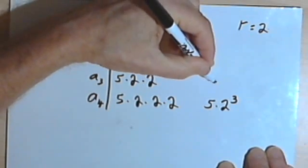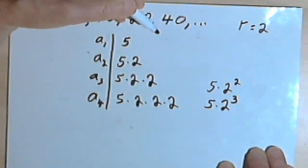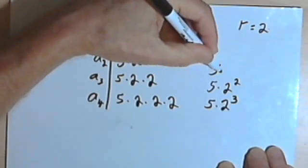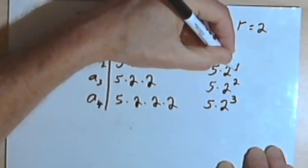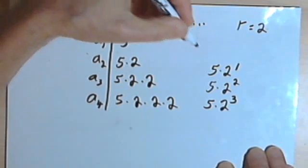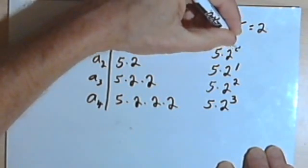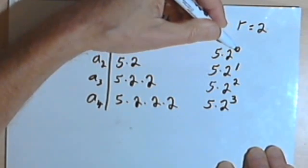The term before that would be 5 times 2 to the second power. The term before that, which is just 5 times 2, using an exponent, I'll write that as 5 times 2 to the first power. And if I want to keep using exponents, the first term will be 5 times 2 to the zero power, since 2 or any number to the zero power is just 1.